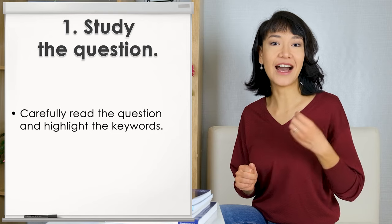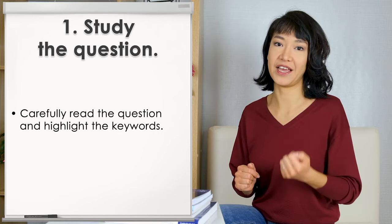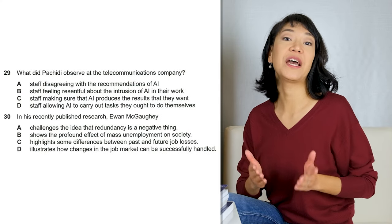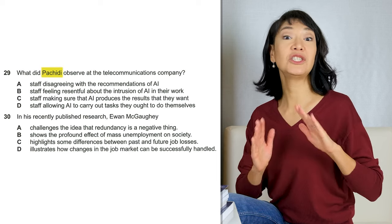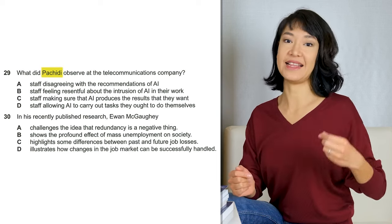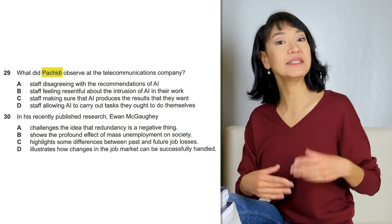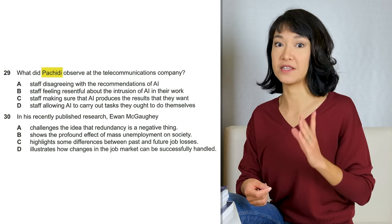Getting back to our questions — I've tried different ways of answering them and this one seems to work best. First of all, carefully read the question and highlight the keywords that can help you locate the answer. Quite a few of these questions tell you exactly where the answer is — in the first paragraph or in the second paragraph. Some don't. Have a look at question 29: we have a surname, Pachidi. Surnames are always keywords — highlight them.